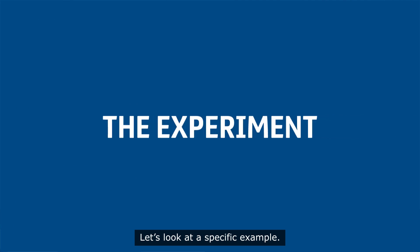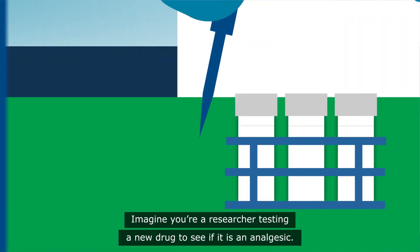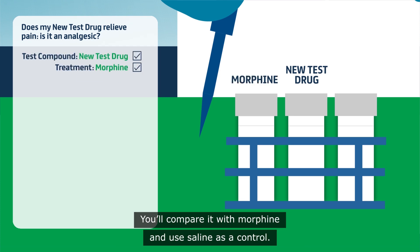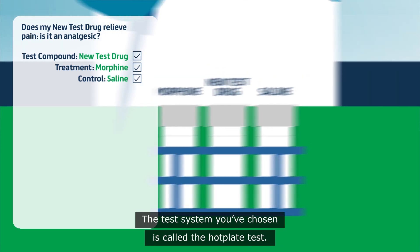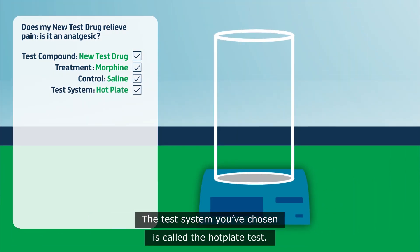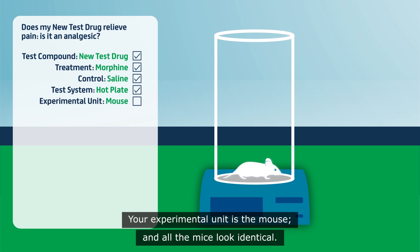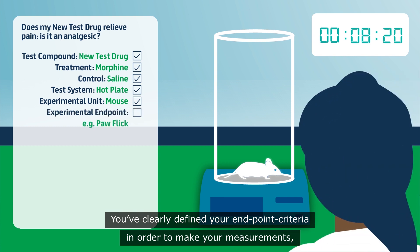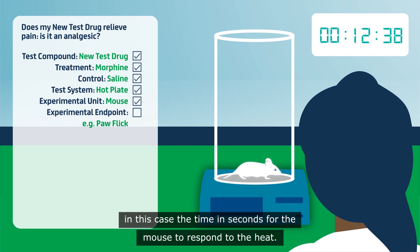Let's look at a specific example. Imagine you're a researcher testing a new drug to see if it is an analgesic. You'll compare it with morphine and use saline as a control. The test system you've chosen is called the hot plate test. Your experimental unit is the mouse and all the mice look identical. You've clearly defined your end point criteria in order to make your measurements — in this case, the time in seconds for the mouse to respond to the heat.